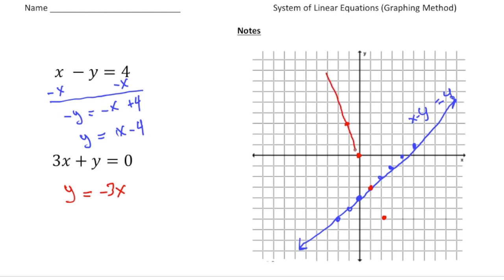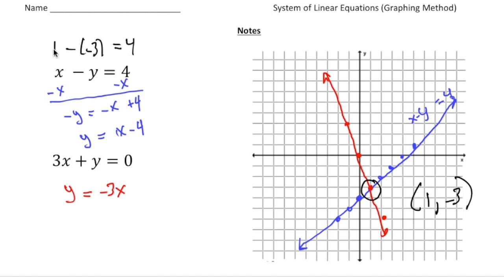Neatly connecting these points, we need to find the point that both functions share — and it's right here where they crisscross. That location is x equals 1 and y equals negative 3. So our solution is (1, negative 3). Plugging in: 1 minus negative 3 equals 4 — that's 1 plus 3 which equals 4, correct. And 3 times 1 is 3, plus negative 3 equals 0. That works also.